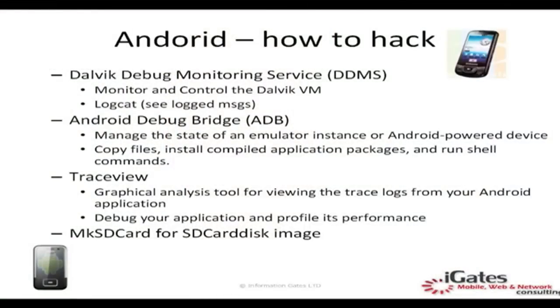So how can we work with Android? Generally we are talking about four different tools that come in the Android SDK bundle. First is the Dalvik Debug Monitoring Service (DDMS). Second is the Android Debug Bridge (ADB), which enables us to start debugging, set breakpoints, examine application state and member values, and manipulate them. Third is TraceView, which gives us graphical analysis for viewing trace logs from Android applications — a kind of sophisticated console. Finally, we can browse the file system using MKSD card and the SD card disk.